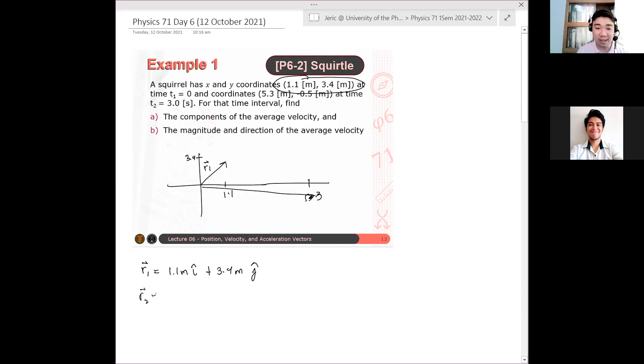The final position of the squirrel is now then equal to what? This is at time t1 equals 0. At r2, we have 5.3 meters i-hat minus 0.5 meters j-hat. And then t2 is equal to what? 3.0 seconds.